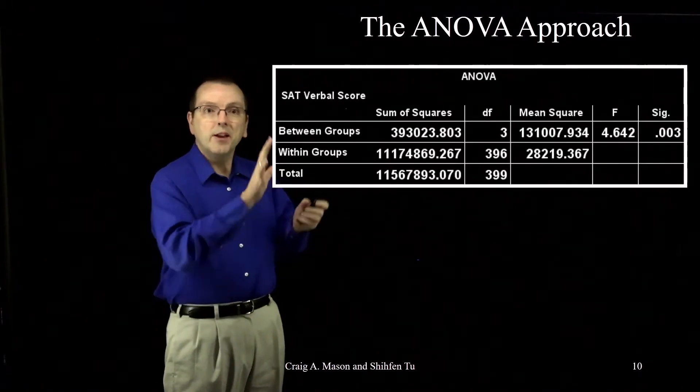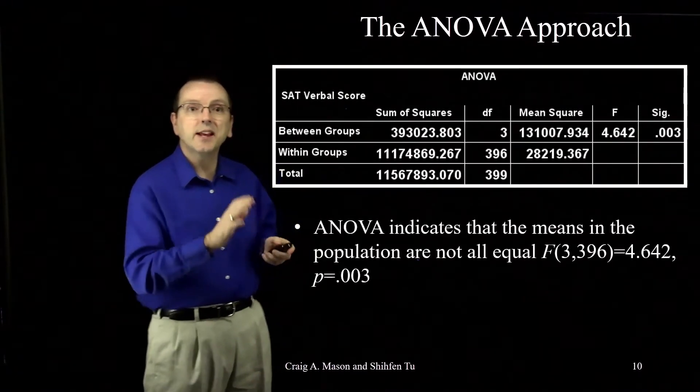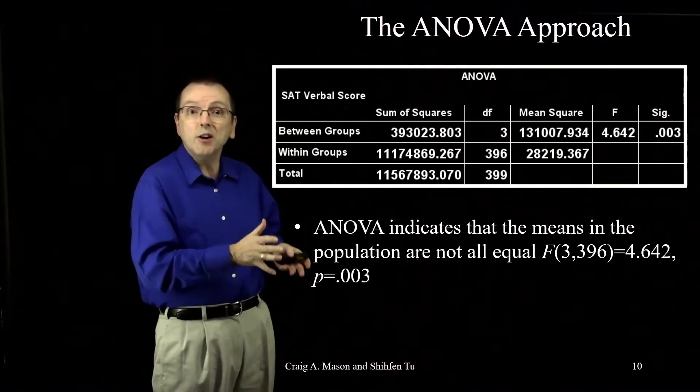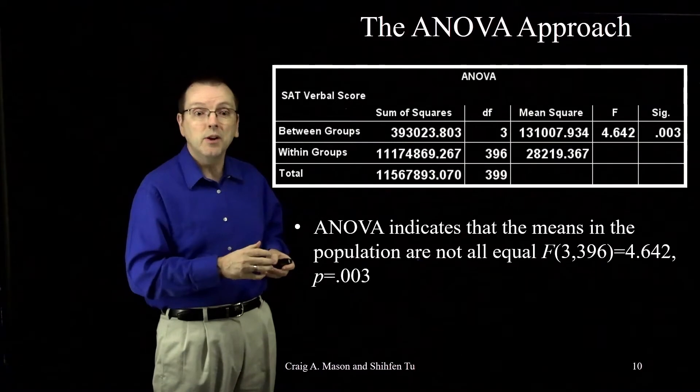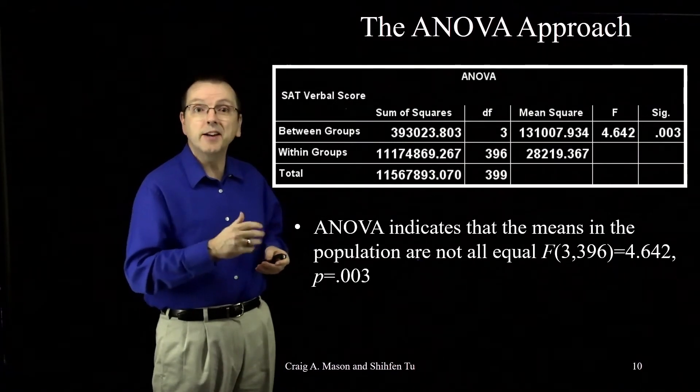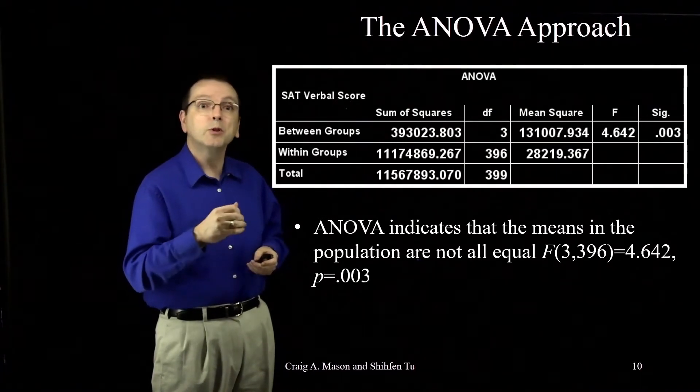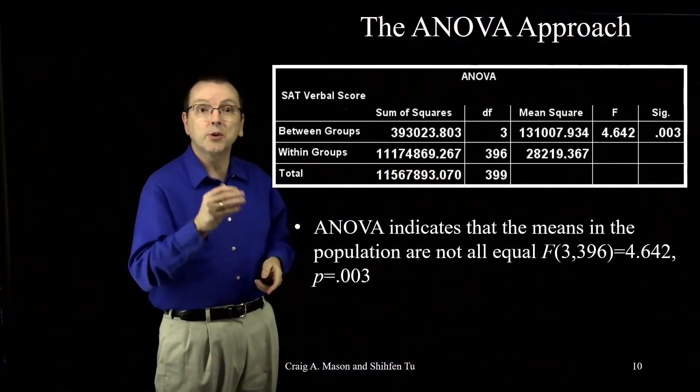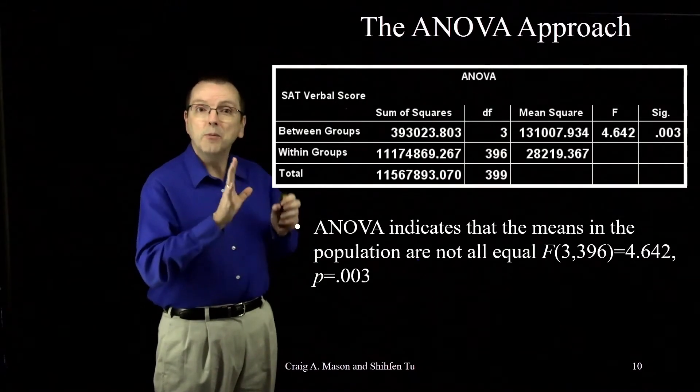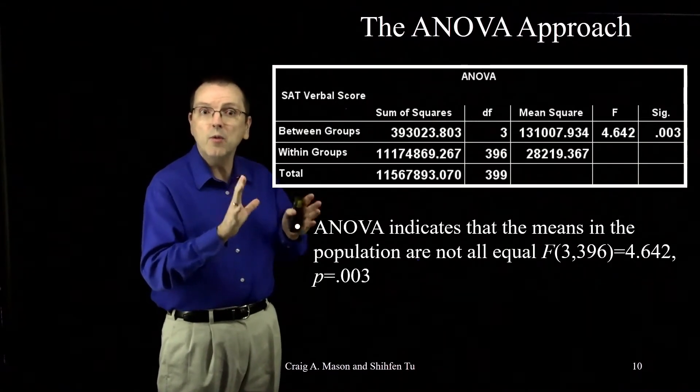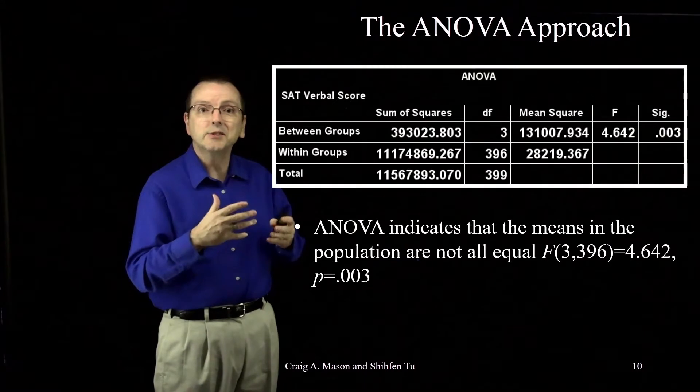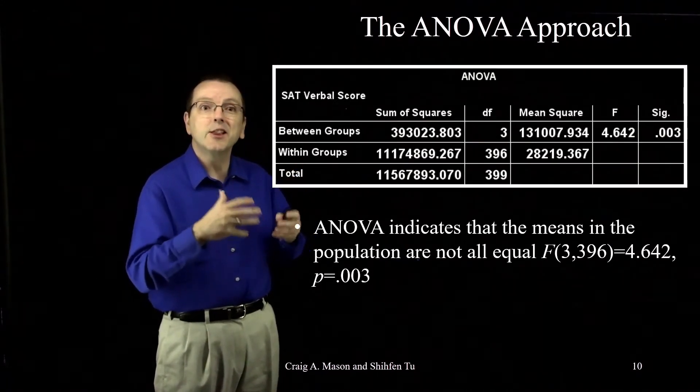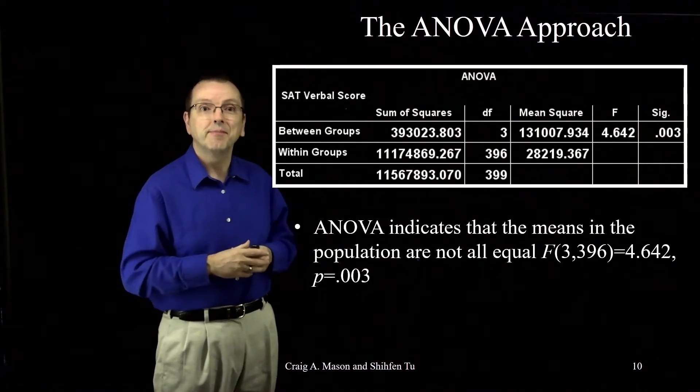Here's the ANOVA analysis and it tells us that the means for these four populations are probably not equal, with an F with 3 and 396 degrees of freedom equal to 4.642 and a p-value of 0.003. Now remember with the ANOVA, it doesn't tell us which of the groups are different. It just tells us that they're not all the same.